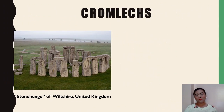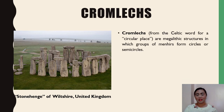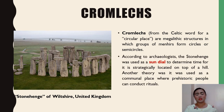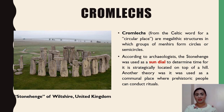The last type of megalithic art is the Cromleks, from a Celtic word meaning circular place in English. These are megalithic structures in which groups of Menhir form circles or semicircles. According to archaeologists, Stonehenge was used as a sundial to determine time, strategically located on top of a hill. Another theory is that it was used as a communal place for conducting rituals. The famous example of a Cromleks is Stonehenge, located in Wiltshire, United Kingdom.